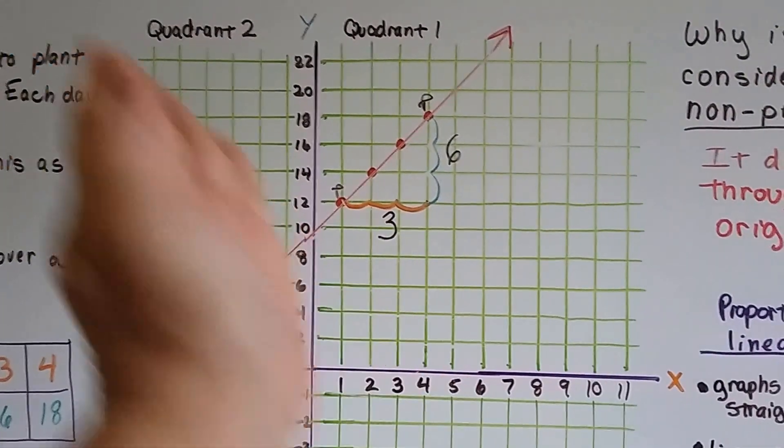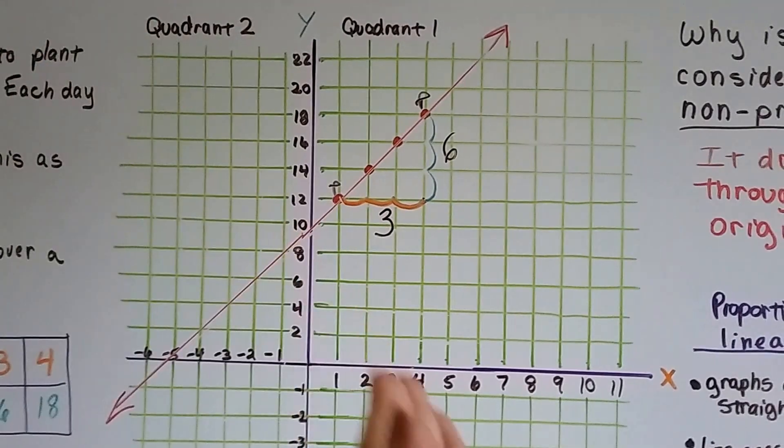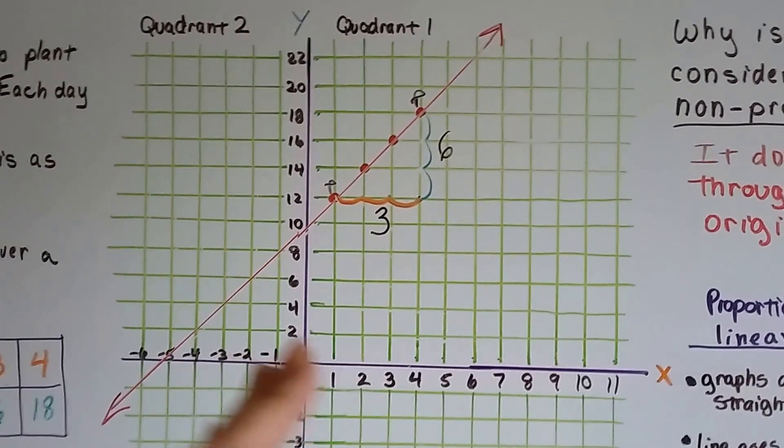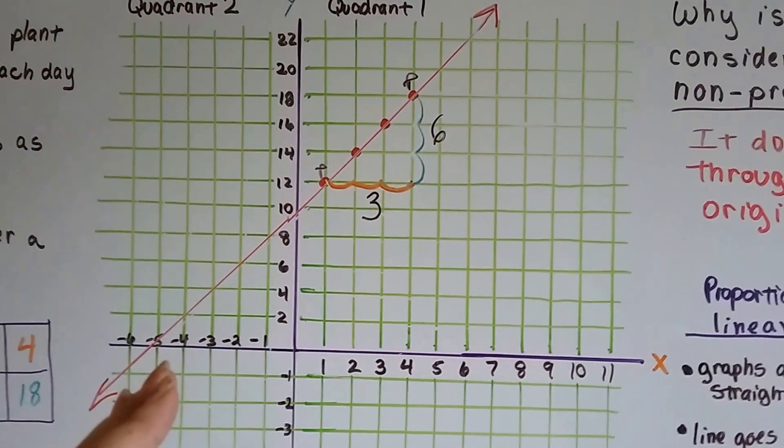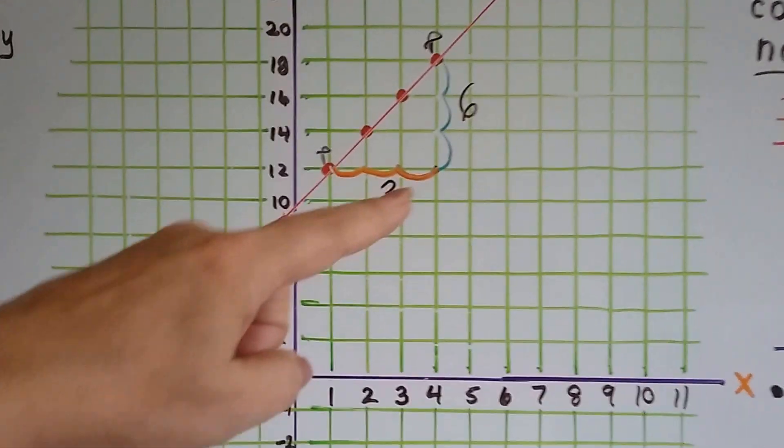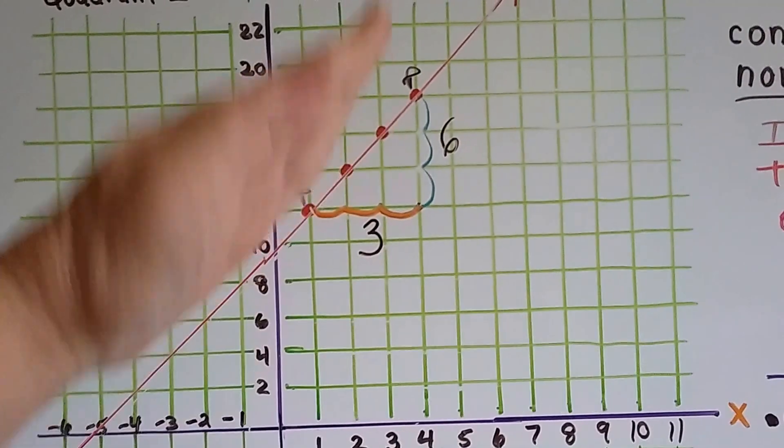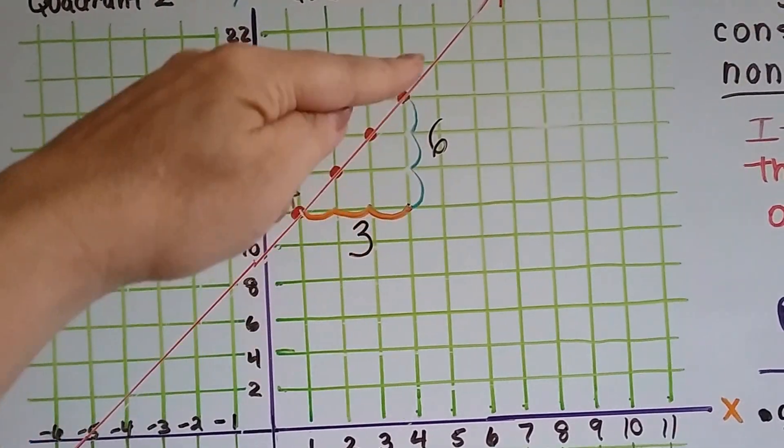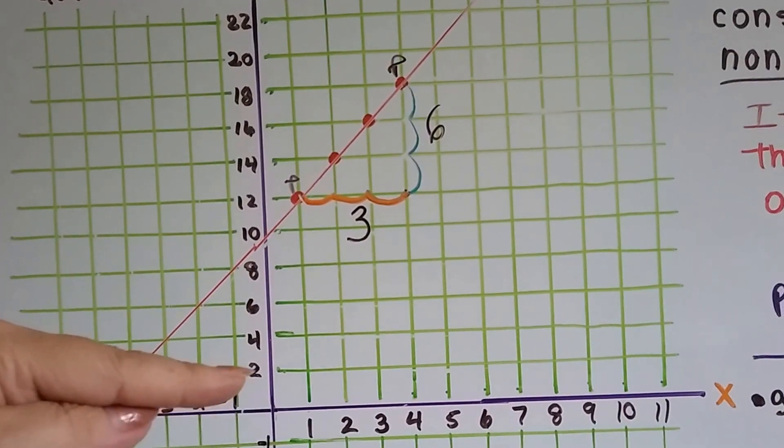If you've seen my videos before, you know if the line is heading this way, it's going to be a negative slope with a negative number. So it's going this way, we know it's a positive number. We can actually look at the rise versus the run. The rise is how much the steepness of this line is going up vertically.